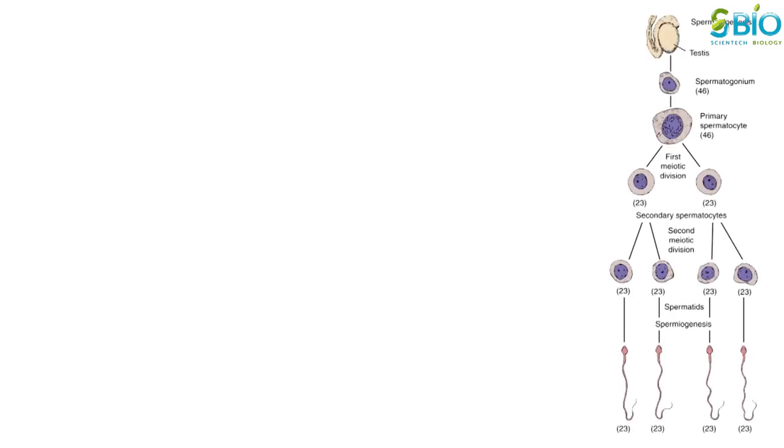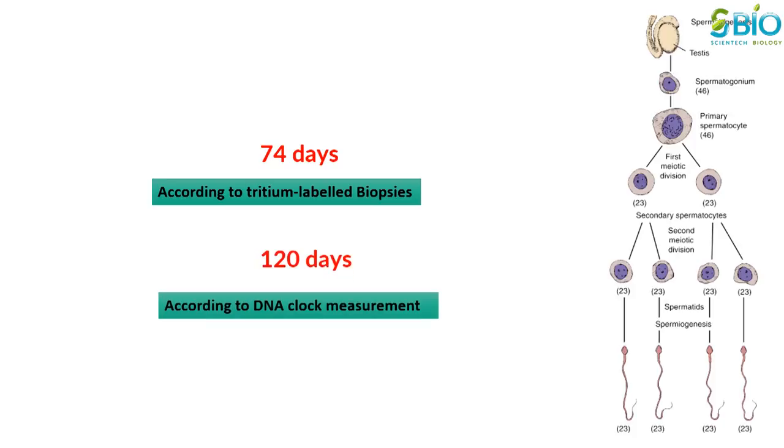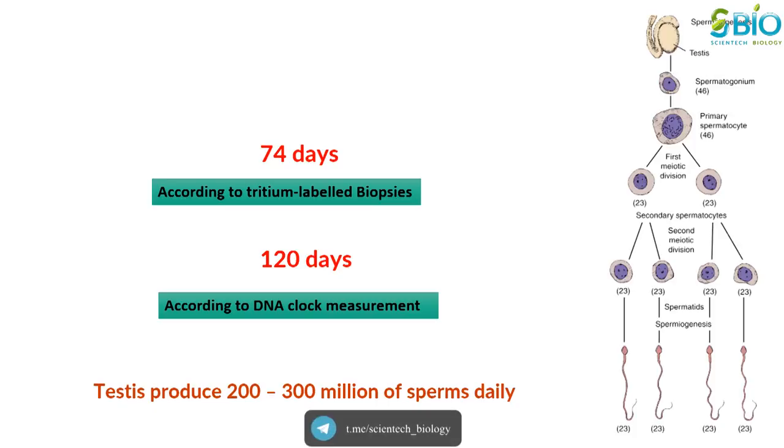For humans, the entire process of spermatogenesis is variously estimated as taking 74 days according to tritium labeled biopsies and approximately 120 days according to DNA clock measurement. Testis produce 200 to 300 million spermatozoa daily. However, only about half of these become viable sperm.